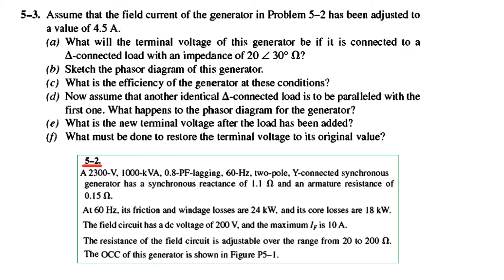Straight away we go to the question. Assume that the field current of the generator in problem 5.2 has been adjusted to a value of 4.5 amperes. These are the questions we will be discussing one by one, but since this references problem 5.2, I have copied 5.2 here and some parameters we will take from question 5.2.